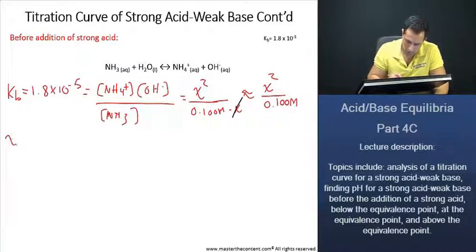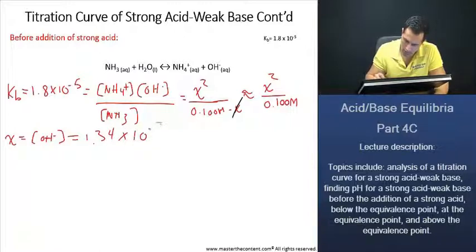From here, we can go ahead and we can calculate x, which is also going to be our hydroxide concentration. And that, once you go ahead and you calculate it, will be 1.34 times 10 to the power of negative 3.